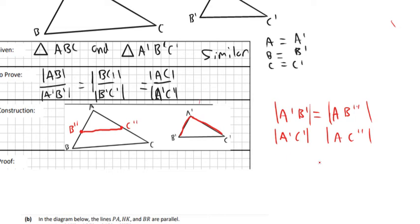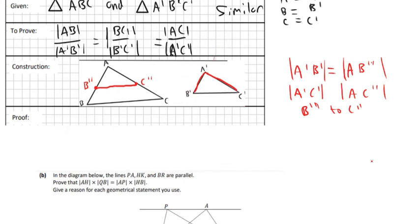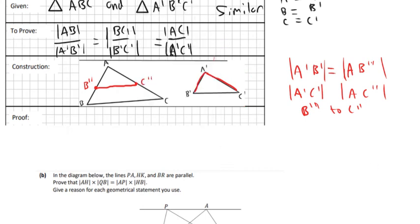Then you join B'' to C''. So we know that A'B' equals AB'', and that A'C' equals AC''. That's all the constructions you have to do — you're basically putting that smaller triangle into the larger one, and then we're going to use that to prove it.